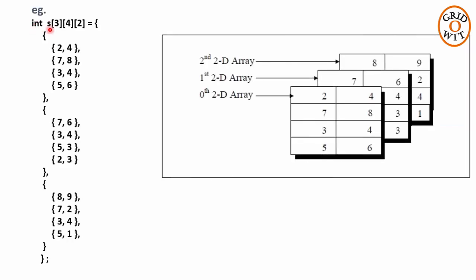For example, this is a 3 dimensional array which is initialized at the time of declaration. Actually, this is one complete statement. For better understanding, I have written in new lines. So in this 3 dimensional array, there are 3 2D arrays and the dimension of each 2D array is 4 rows and 2 columns. The number of elements in this 3 dimensional array is 3 x 4 x 2 which is 24 elements.